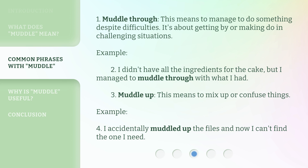Muddle through: this means to manage to do something despite difficulties. It's about getting by or making do in challenging situations. Example: I didn't have all the ingredients for the cake, but I managed to muddle through with what I had. Muddle up: this means to mix up or confuse things. Example: I accidentally muddled up the files and now I can't find the one I need.